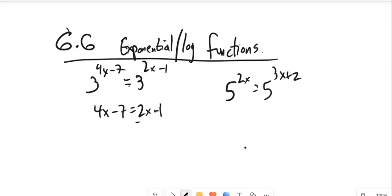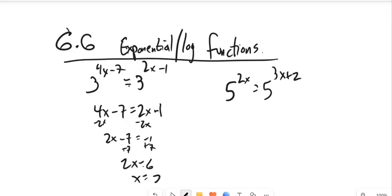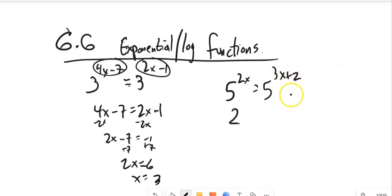To solve this I subtract 2x from both sides, add 7 — 2x is 6, so x must be 3. If I plug it back in, I see 3 to whatever that is equals 3 to whatever that is — they're the same exponent. Similarly, 5 to something equals 5 to something: same base, so just set exponents equal and solve.